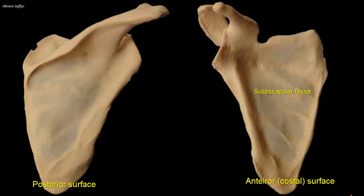The three fossae — supraspinous, infraspinous, and subscapular — provide attachment for fleshy muscles.